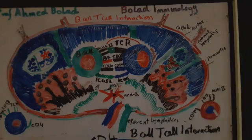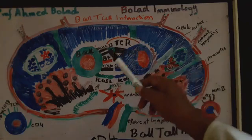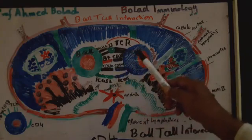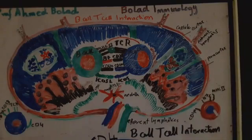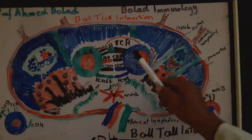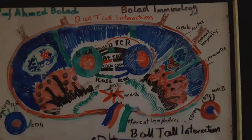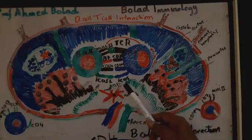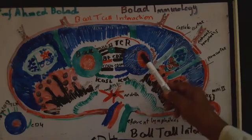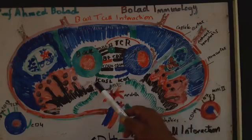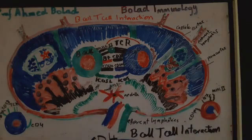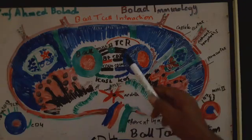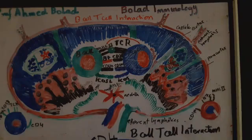Some cytokines are produced according to this interaction — for example, interleukin-4, which is a B-cell growth factor. This interaction is further potentiated by ICOS (inducible co-stimulatory molecules) on the surface of T-cells, which interact with ICOS-ligand on the surface of B-cells. These ligand interactions provide the second signal, while cytokines provide the third signal.